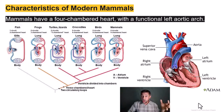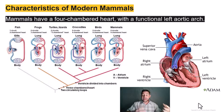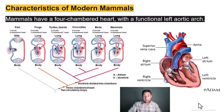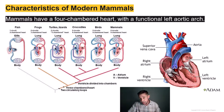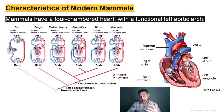Thus, mammals have evolved a very efficient pump to move blood. Mammals have a four-chambered heart: two atria on top, which receive the blood, and two ventricles on the bottom, which pump the blood. The ventricles are separated by a wall called the septum. This is what makes the heart so efficient — it separates the deoxygenated blood from the oxygenated blood.